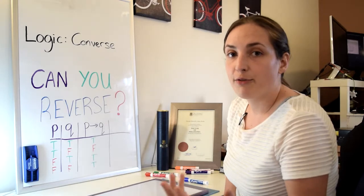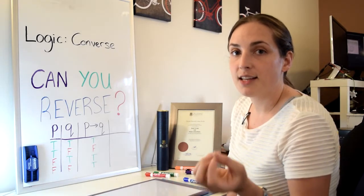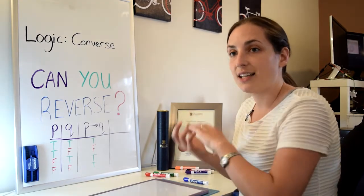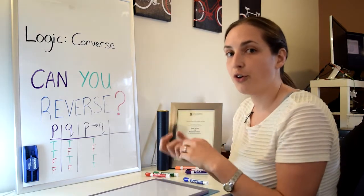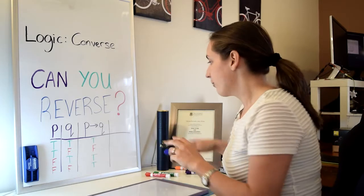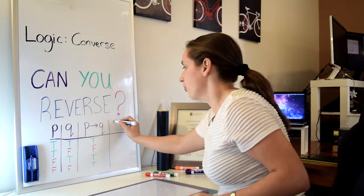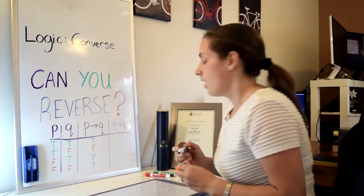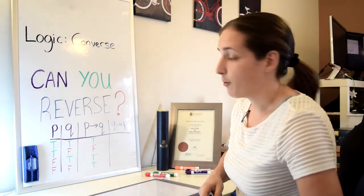When you're looking for the converse and you have a statement that says if P then Q, the converse is exactly the opposite. It's if Q then P. So if we write down if Q then P, we may want to understand how this looks in terms of its truth table.